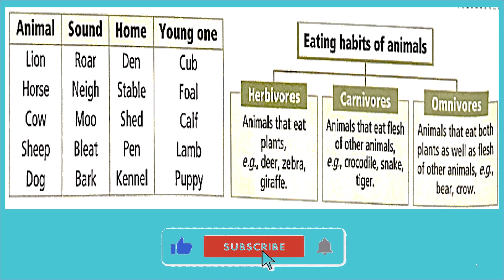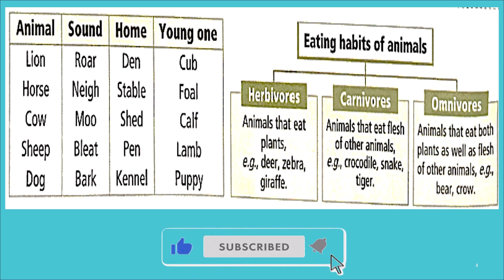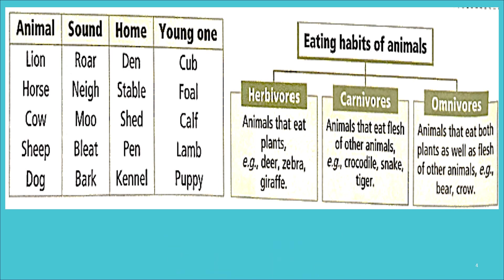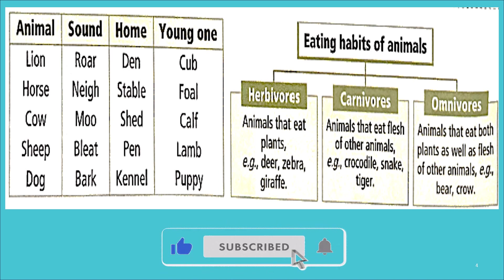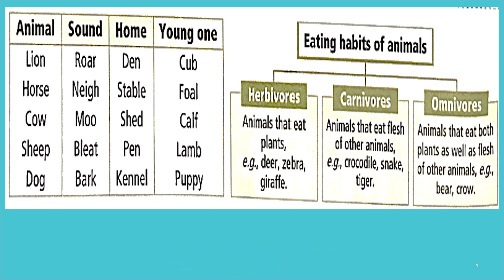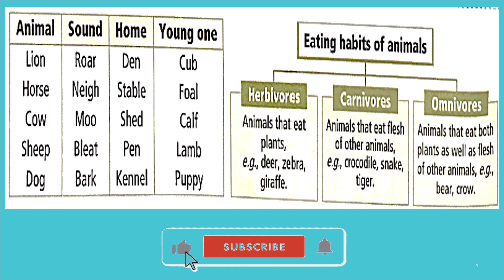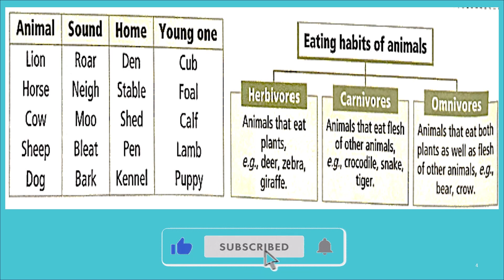Now let's see animal sounds, homes, and young ones. Only those mentioned in the workbook are covered here — go explore more with your parents and teachers. For lion: sound is roar, home is den, young one is cub. For horse: sound is neigh, home is stable, young one is foal.